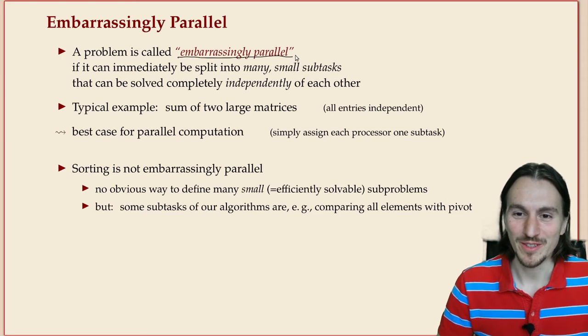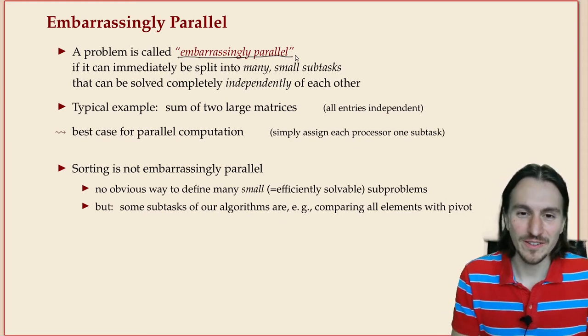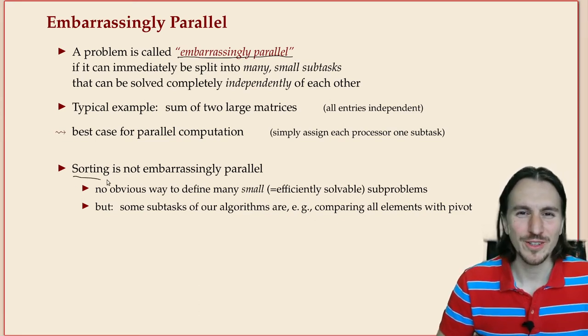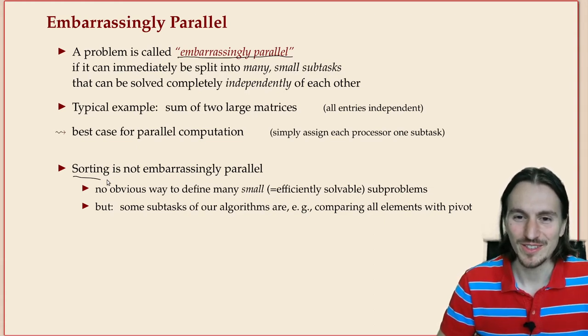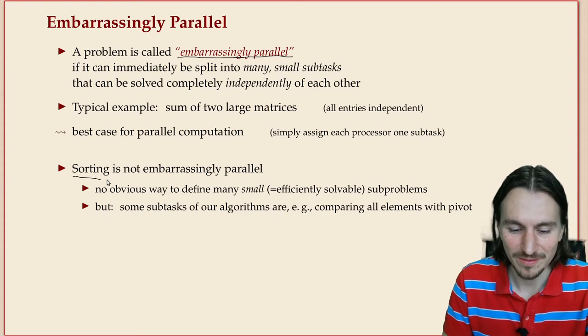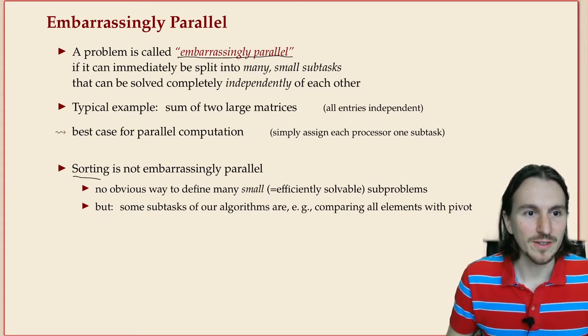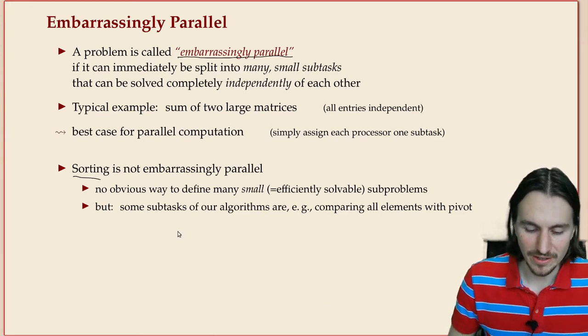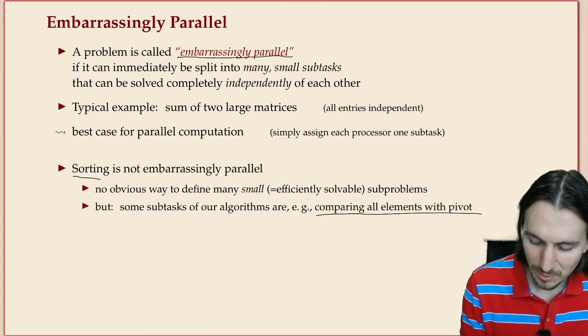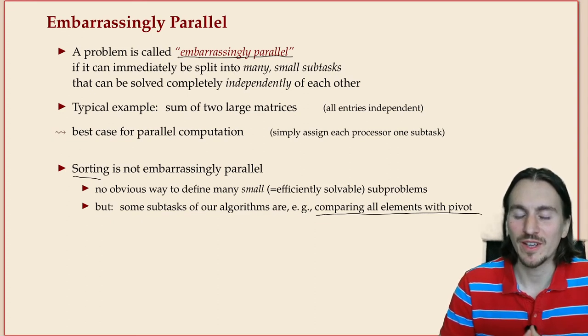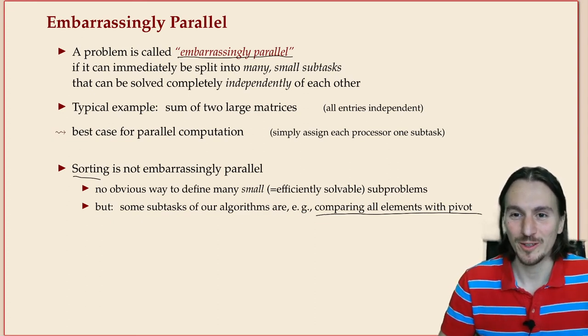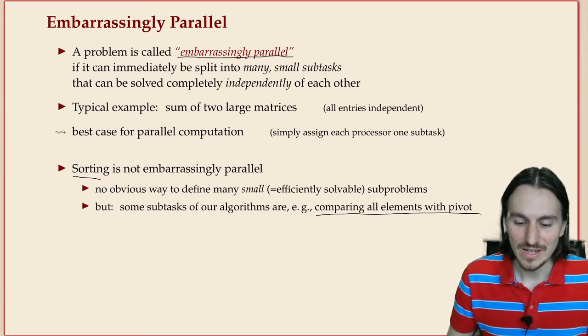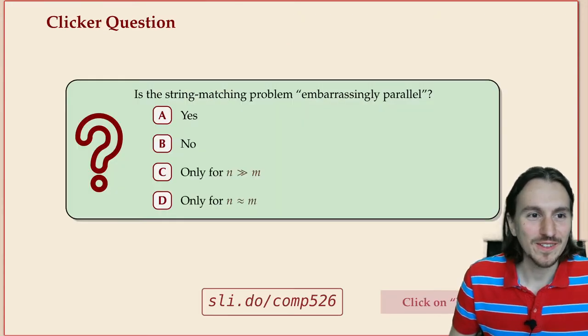Many problems are not embarrassingly parallel, or at least not in their entirety or not at first sight. One example we've seen is sorting. The entire problem of rearranging a list doesn't seem to allow this immediate splitting into subproblems, so it's really not embarrassingly parallel. But some parts of it are embarrassingly parallel. We use this in quicksort—comparing all the elements with the pivot and noting the results is embarrassingly parallel because you can do it in parallel for all the different positions in the array.